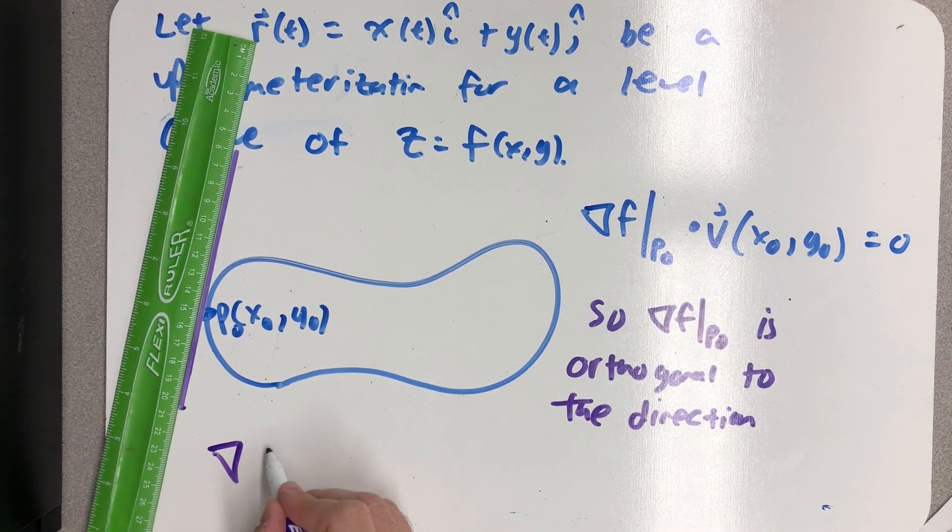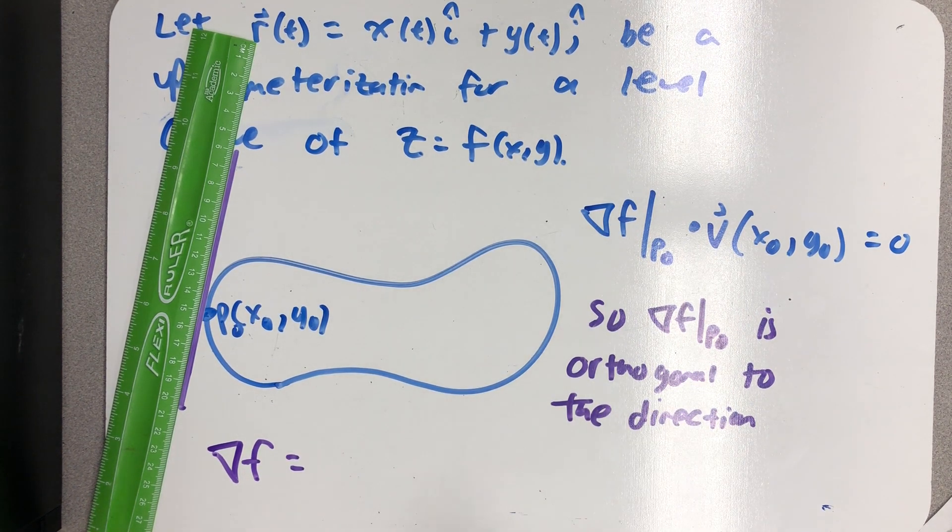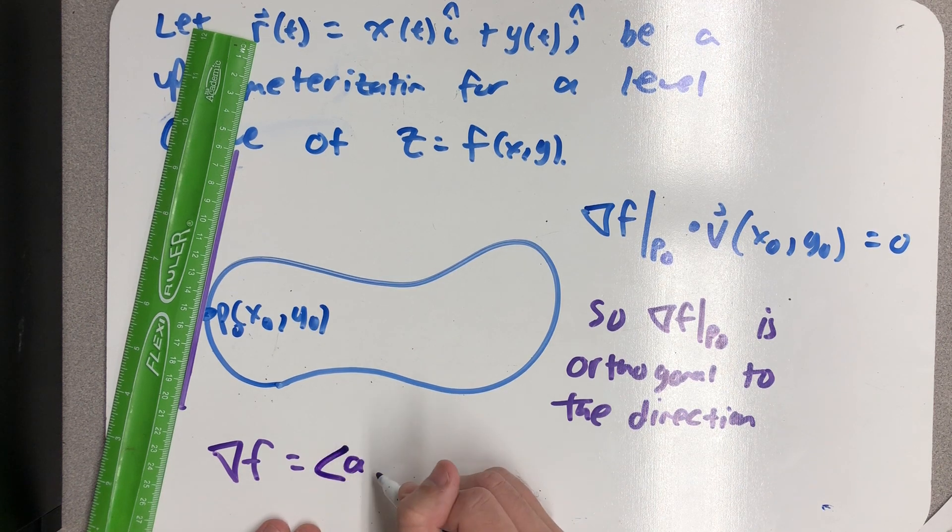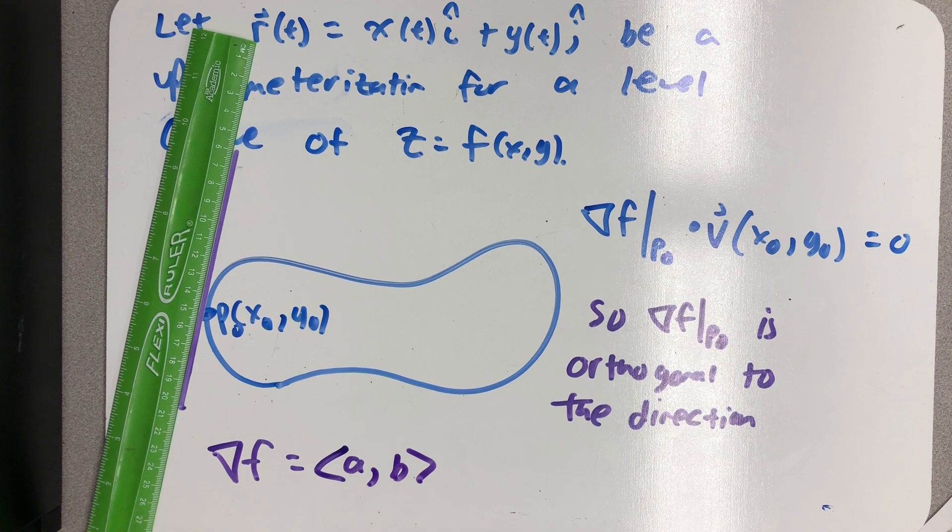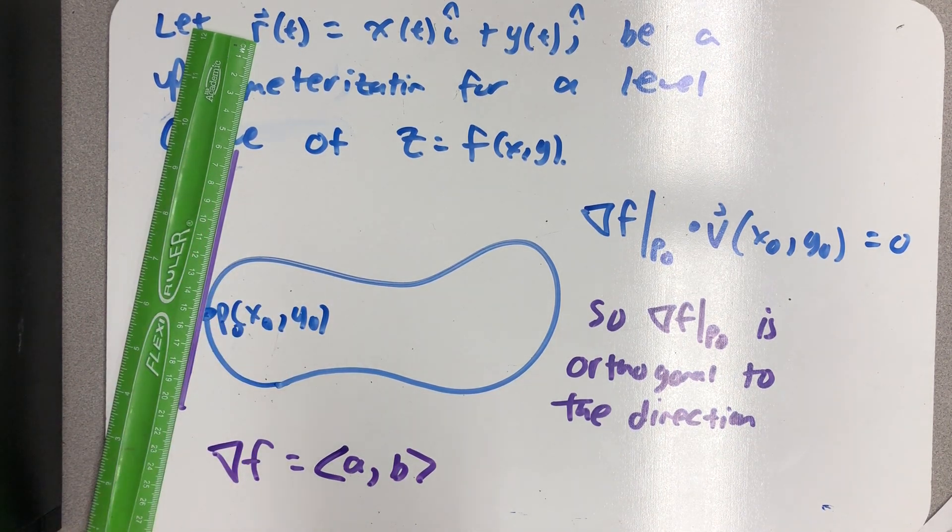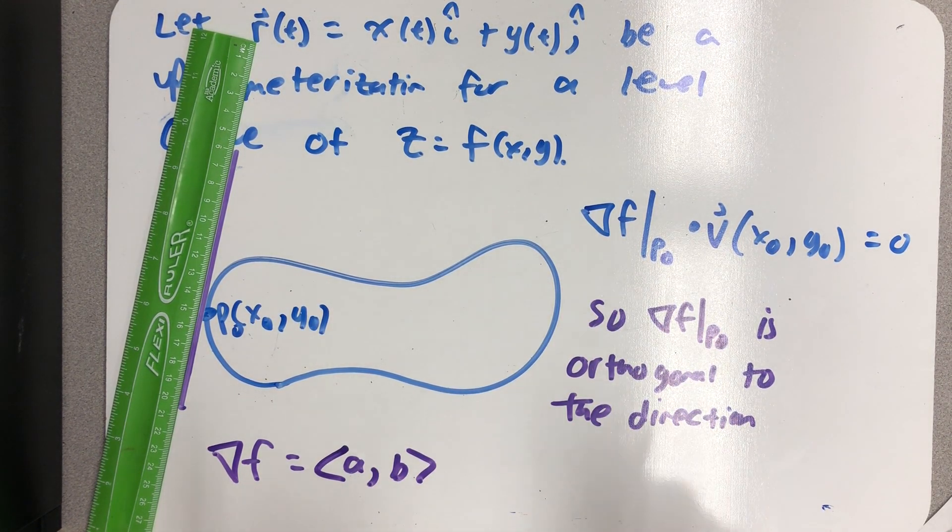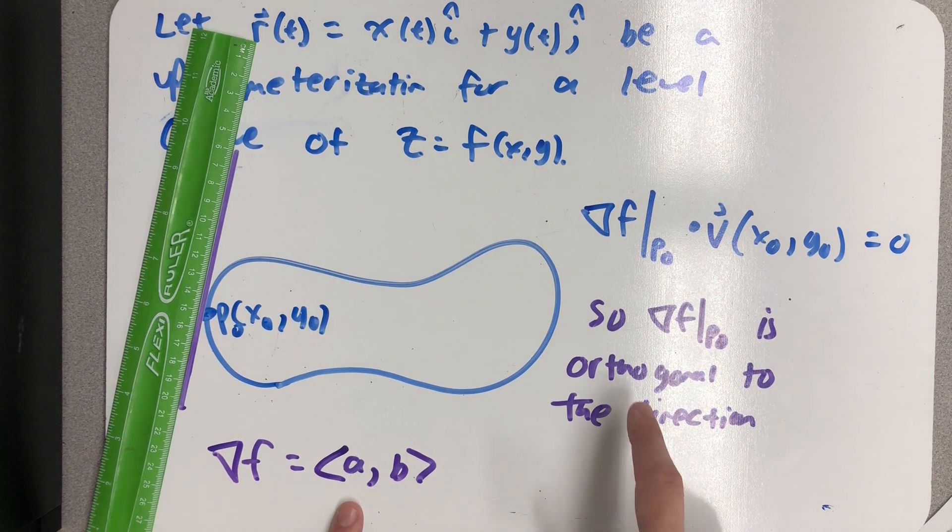So, if del f at that point, and for ease I think I'll just start writing del f and we'll understand that I'm talking about del f at that particular point, was equal to the vector <a,b>. I claim I can do something clever with that vector to have a vector that points in the direction of motion. It might not be v itself, it probably won't be v itself, but it would point in the right direction. Because all I have to do is do something with this vector to have an orthogonal vector to it.